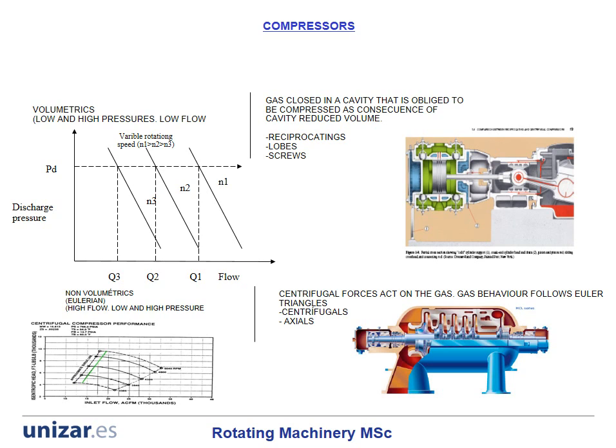The curves of actual flow versus differential head associated with a centrifugal compressor can be adjusted to a polynomial correlation, where the head decreases meanwhile the flow increases.